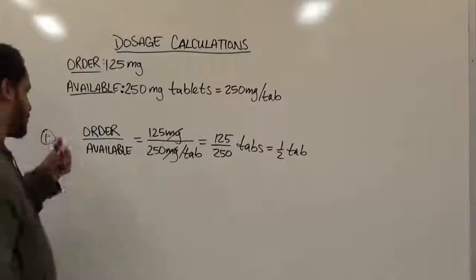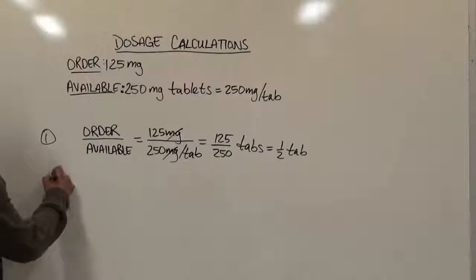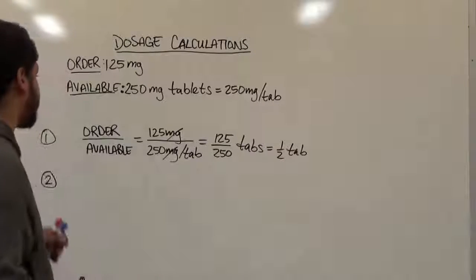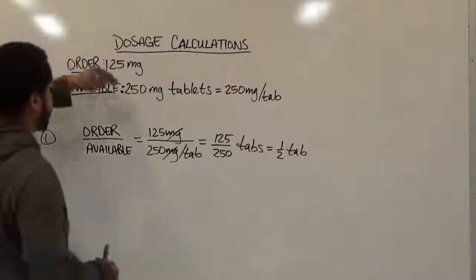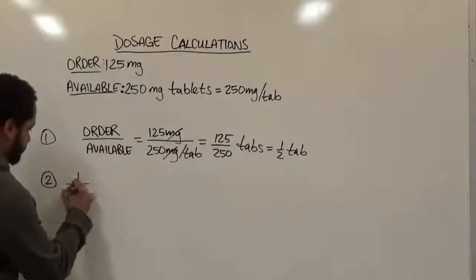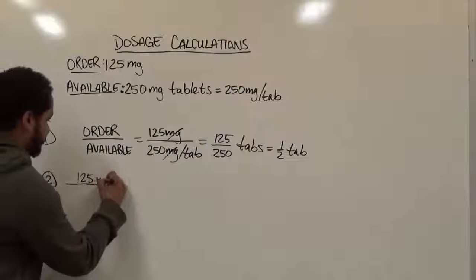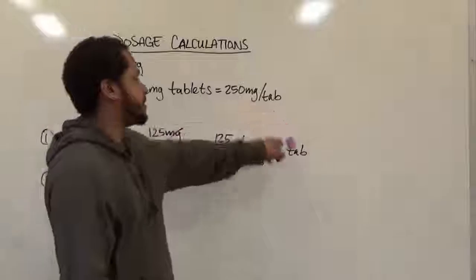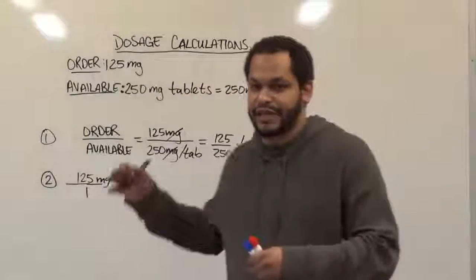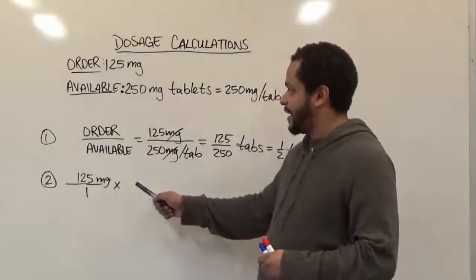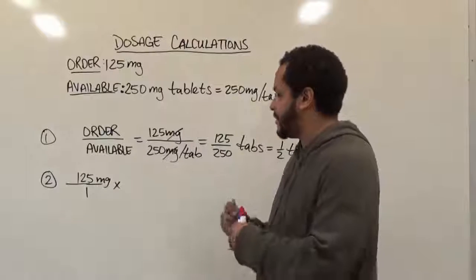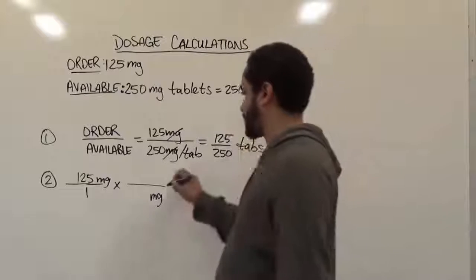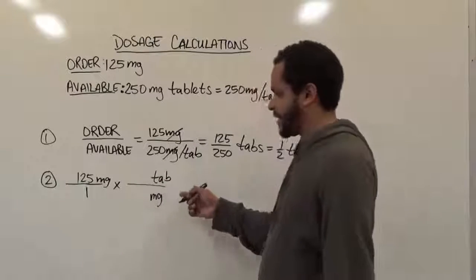This is called the order over available method. In the second method, we'll be exploring the dimensional analysis of the problem. To do the dimensional analysis, we basically take our order and put it over one — that's 125 milligrams over one — and we're going to multiply it with a conversion factor. To use this correctly, we want the dimension of our order to reduce out to one. So when setting up this fraction, I want the milligrams to be the denominator and the tabs as the numerator, because I'm trying to convert from milligrams to tabs.